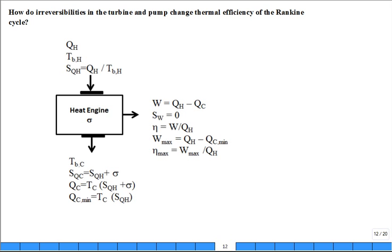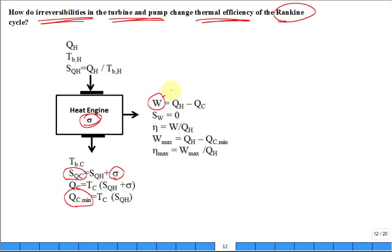So how do, if you do have irreversibilities in the turbine and the pump, how does that change the thermal efficiency of the Rankine cycle? Let that now be not zero. Be a positive amount. That just means you have to have a greater entropy transfer out because you have more to get rid of, to dump. And you're going to have a higher Q sub-C. When you have a higher Q sub-C, you have a lower W, less work out. And efficiency is not maximized. It's reduced. So that's the effect of irreversibilities in the turbine and in the pump.